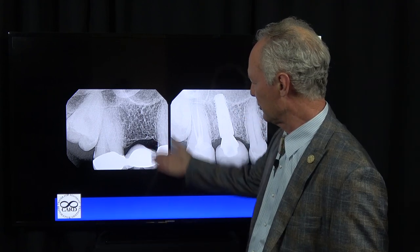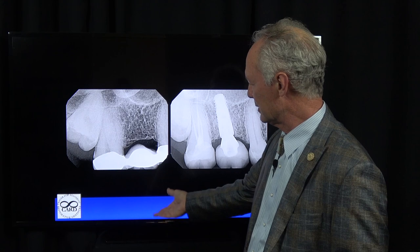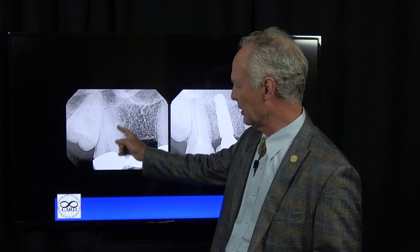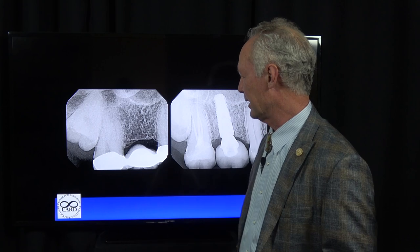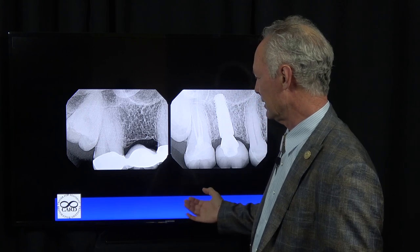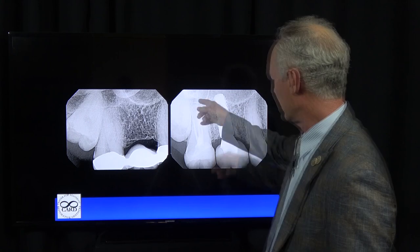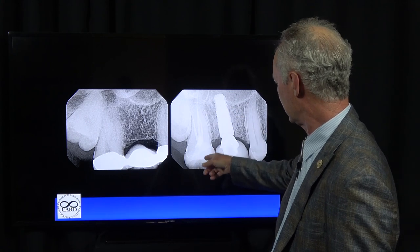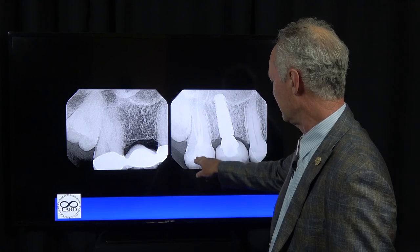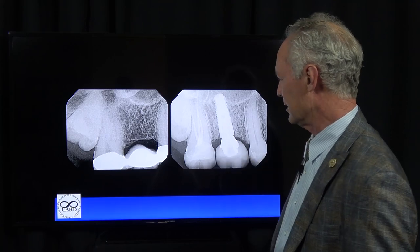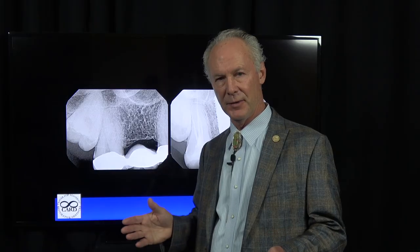So in this gentleman's case, when I removed this old bridge, there was decay under the bridge and we had to do a root canal on the back tooth. It was decided that we would place an implant after we did the root canal on the back tooth, and then do individual crowns on the adjacent teeth. It's easier to keep an implant clean than a fixed bridge.